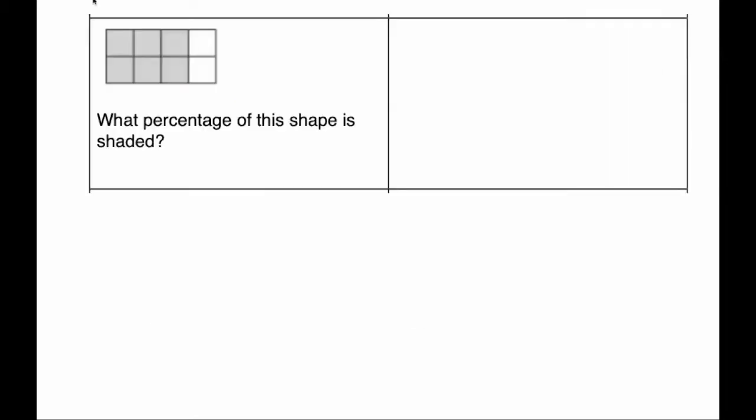Our next question says, what percentage of this shape is shaded? There's 1, 2, 3, 4, 5, 6, 7, 8 squares, and 6 of them are shaded, so that's 6 over 8. If we cancel that down, that's 3 quarters, and 3 quarters as a percentage is 75%.